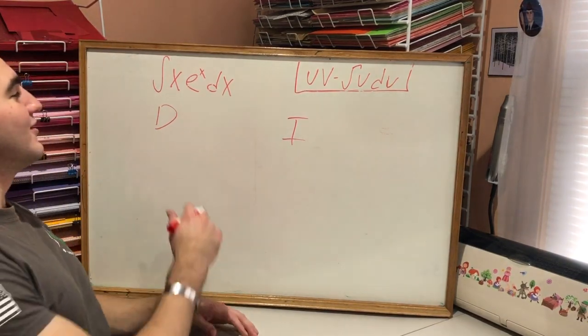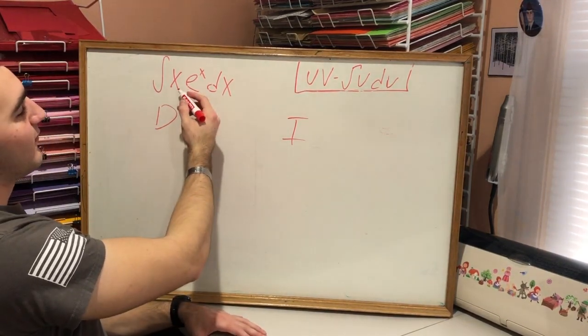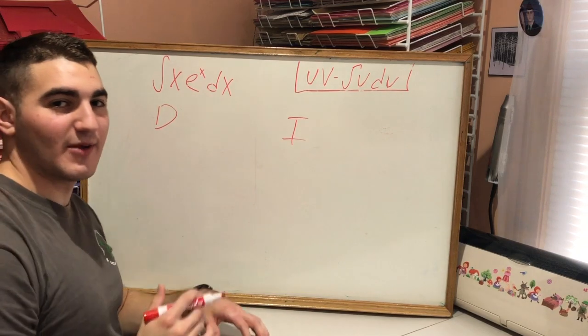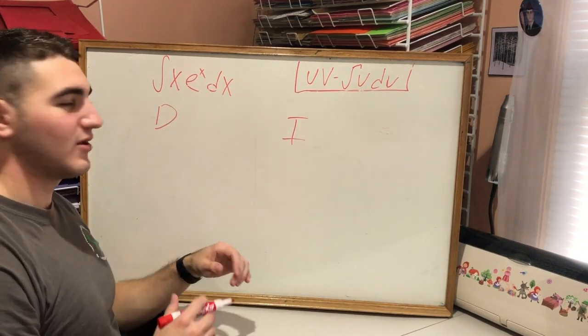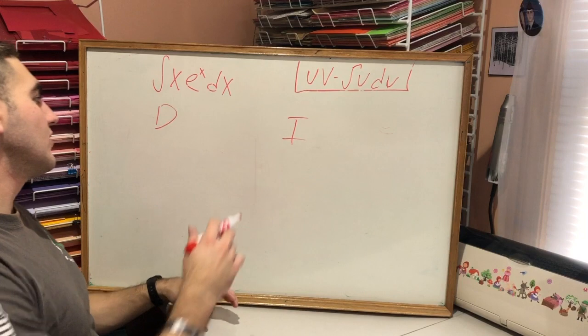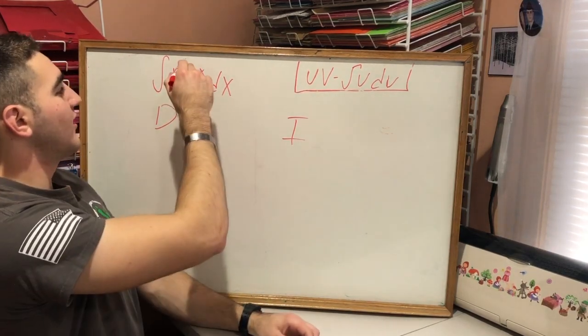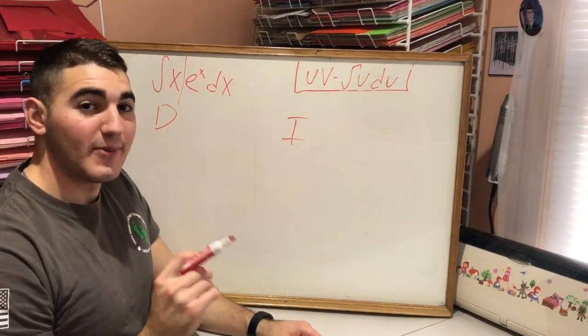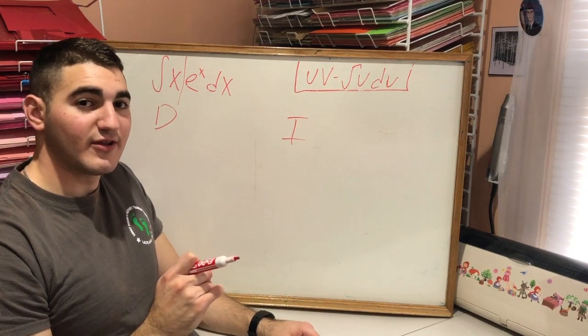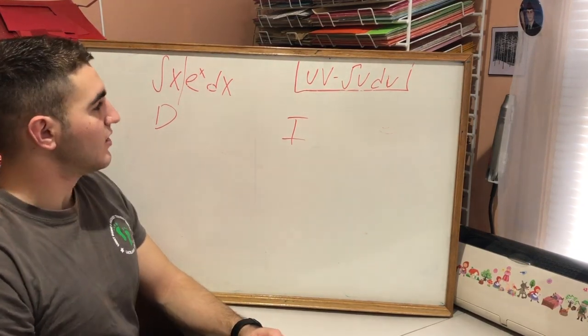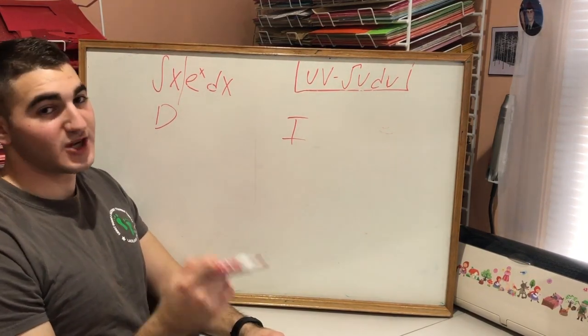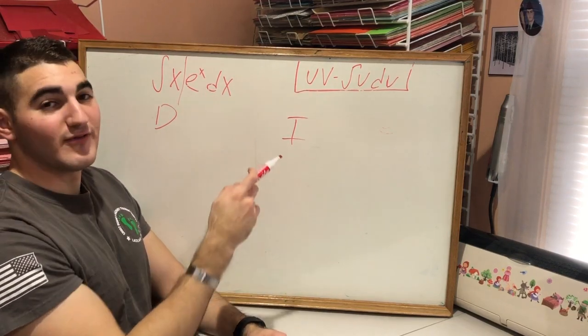Here we go. So first we're gonna see our integral, we have to integrate by parts x times e to the x dx. You could try u sub and it's not gonna work. So here we go, we're gonna dissect it in half. Now we're gonna pick the term that's easiest to derive and the term that's easiest to integrate.